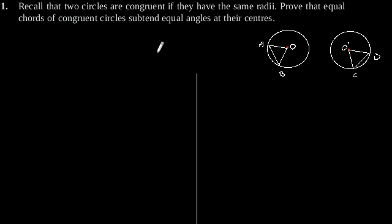Exercise 10.2, Question number 1. Recall that two circles are congruent if they have the same radii. Prove that equal chords of congruent circles subtend equal angles at their centers.